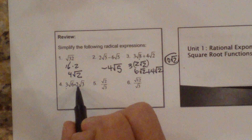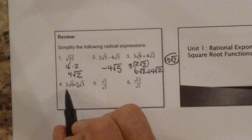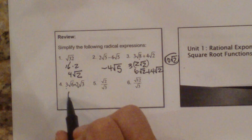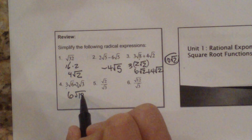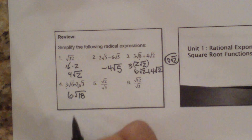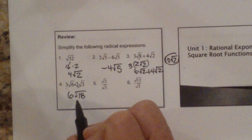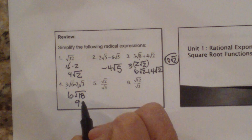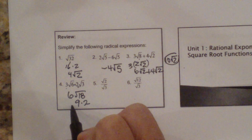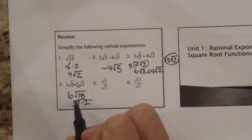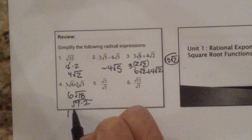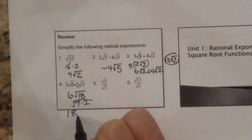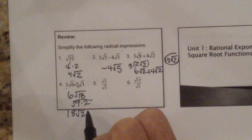Multiplying — you do outside to outside. So you get 6 root 18. But we know the square root of 18 breaks down to 9 times 2, and 9 is a perfect square. So it's going to be 18 root 2.